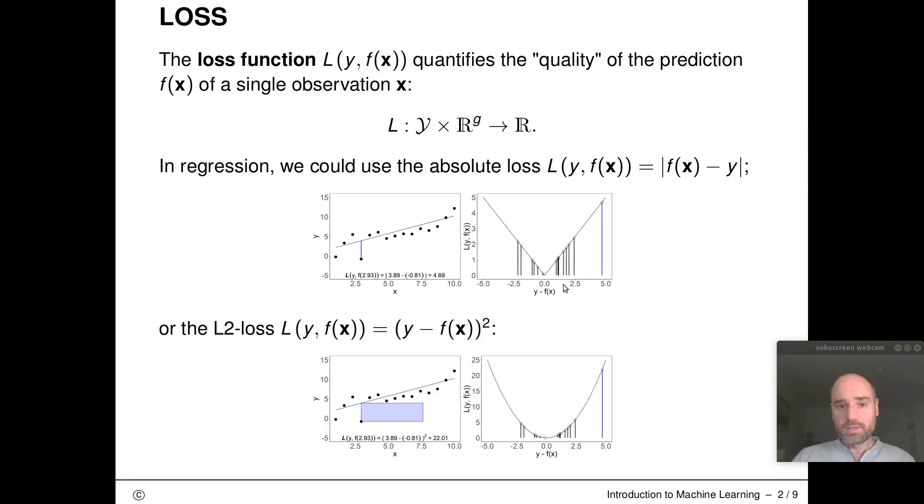And we'll do that by introducing the so-called loss function. The loss function is just a two-argument function where we plug the ground truth label into the first argument and the vector of predictions into the second argument, and we write down in a mathematical precise manner how we measure this difference.